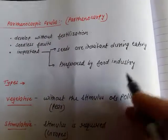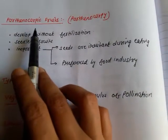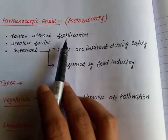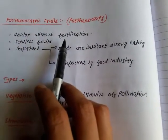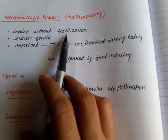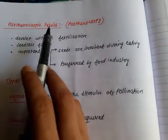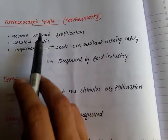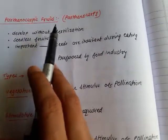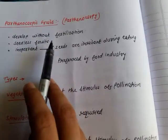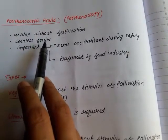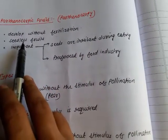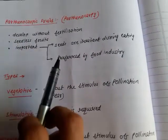Now, one more type of fruit is parthenocarpic fruit — fruits which develop without fertilization. We know that naturally a fruit forms after fertilization, and the product of fertilization is a seed. In parthenocarpic fruits, fertilization does not occur, so seeds are also not formed. Therefore, parthenocarpic fruits are those which develop without fertilization and are seedless fruits. The production and development of seedless fruits is known as parthenocarpy.